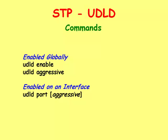In order to install UDLD on a switch globally, you can use the UDLD enable command to configure it in normal mode, or UDLD aggressive to configure it in aggressive mode.